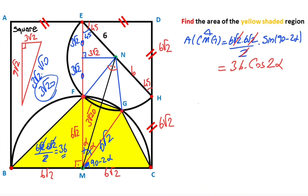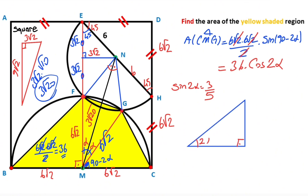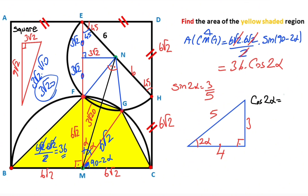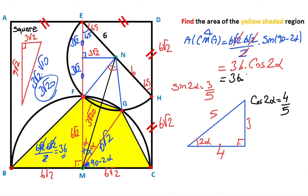If you draw a right triangle where sin(2α) = 3/5, that means this triangle is a 3-4-5 special right triangle. Therefore cos(2α) must be equal to 4/5. So plugging this value into the equation, the area of triangle CMG is going to be 144/5 square units.